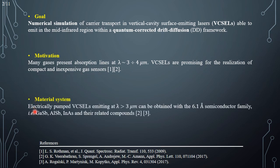In order to realize electrically pumped VCSELs emitting at a wavelength longer than 3 micrometers, it is possible to exploit the 6.1 angstrom lattice-matched semiconductor family, including, for instance, gallium antimonide, aluminum antimonide, indium arsenide and their related compounds.